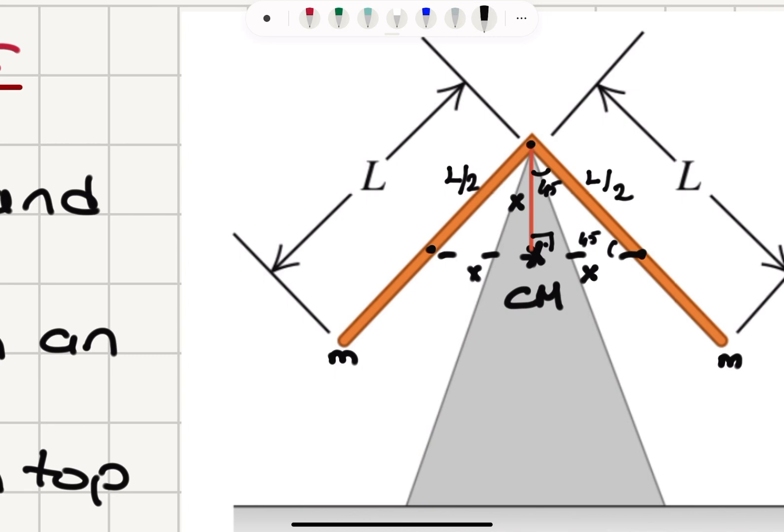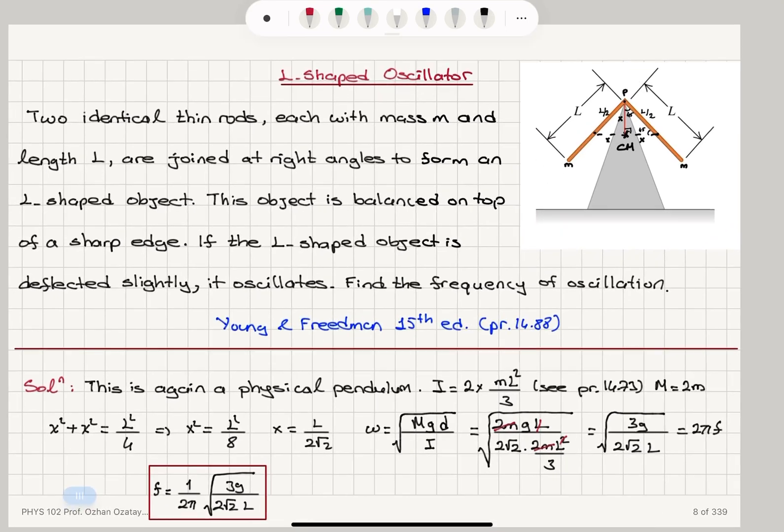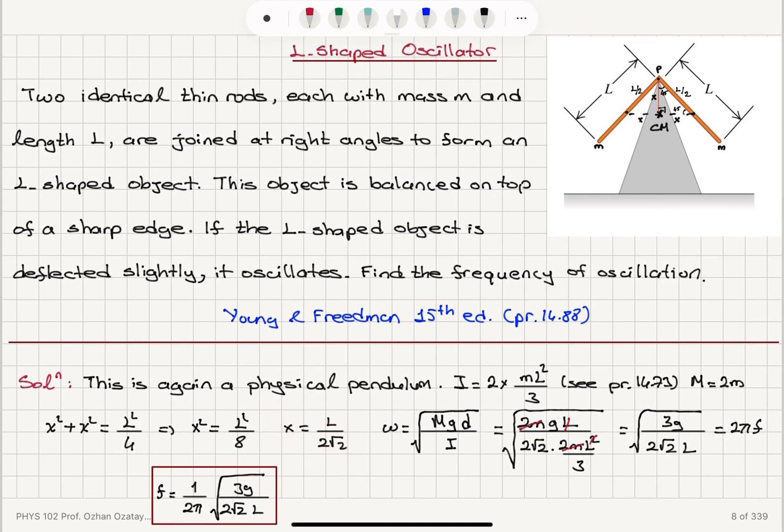This is our pivot point P, as L over 2 square root 2, using Pythagorean theorem. And since the angular frequency omega is square root, total mass, gravitational acceleration, distance between center of mass and pivot point, divided by moment of inertia...